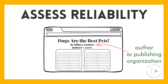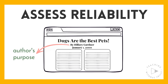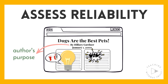First, determine the author or publishing organization. It's important that the author is an expert on the topic. Try to learn more about the author's education and experience in the field. It's also important to determine the author's purpose. Is the sole purpose to inform and educate the reader? Or does the author also want to persuade, entertain, or sell something to the audience?